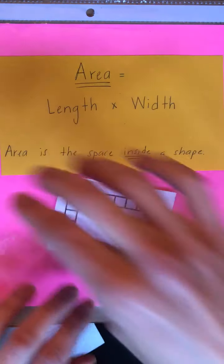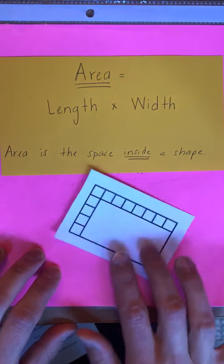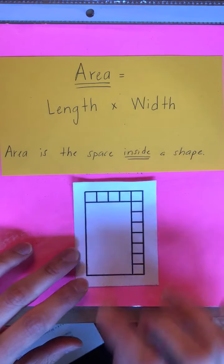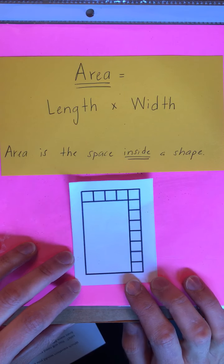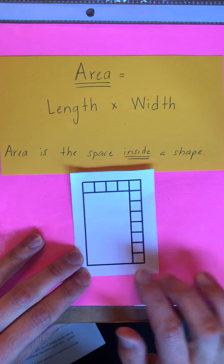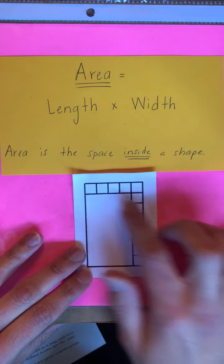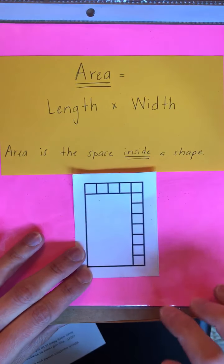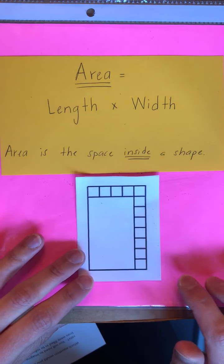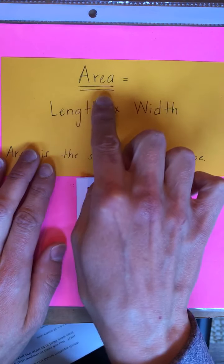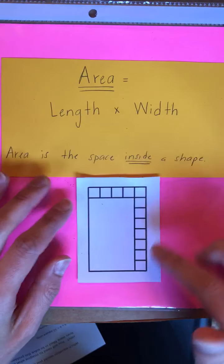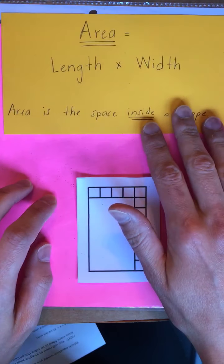A lot of times when asked to find area we can count up all the little squares on the inside of a shape, but many times we are given a shape that's completely empty or only partially filled up with squares. When that happens we need to use our formula: area equals length times width to find the area of a given shape.